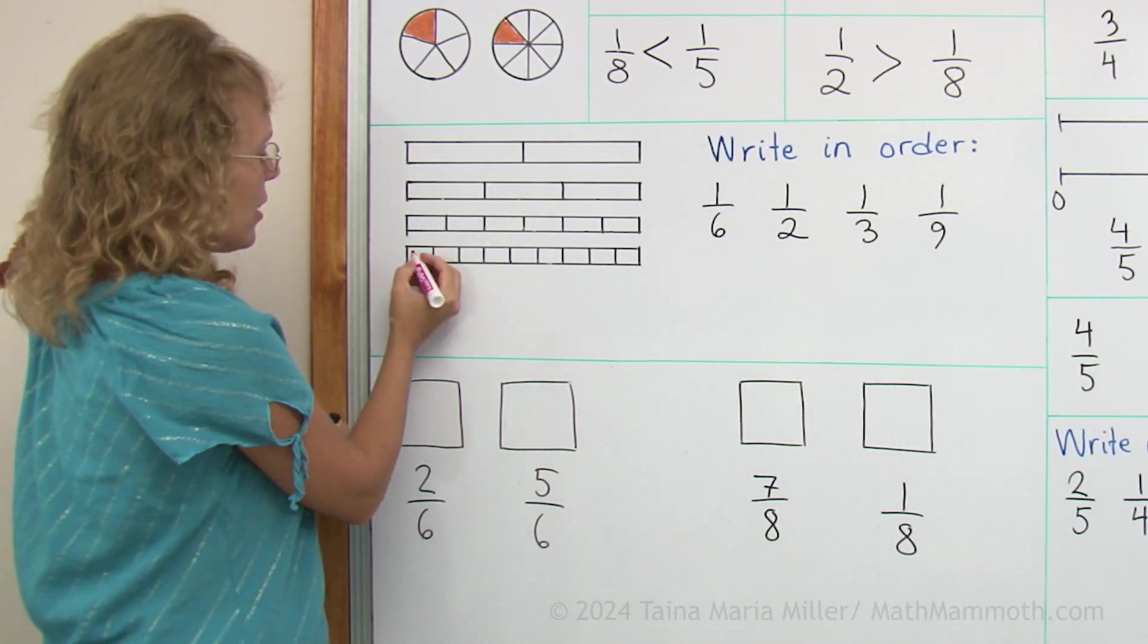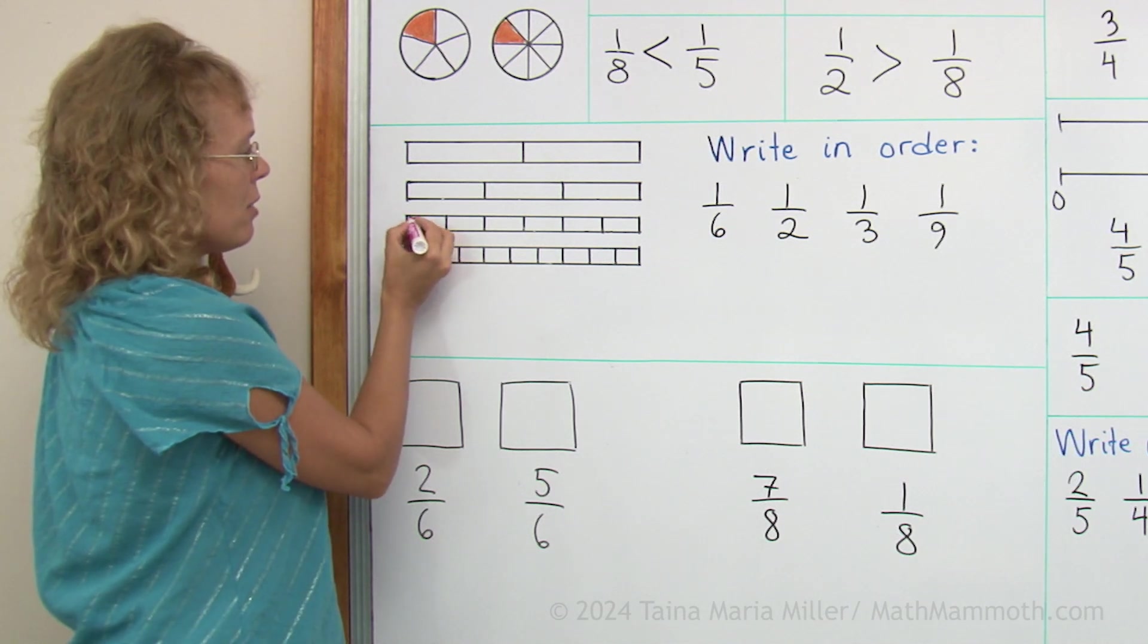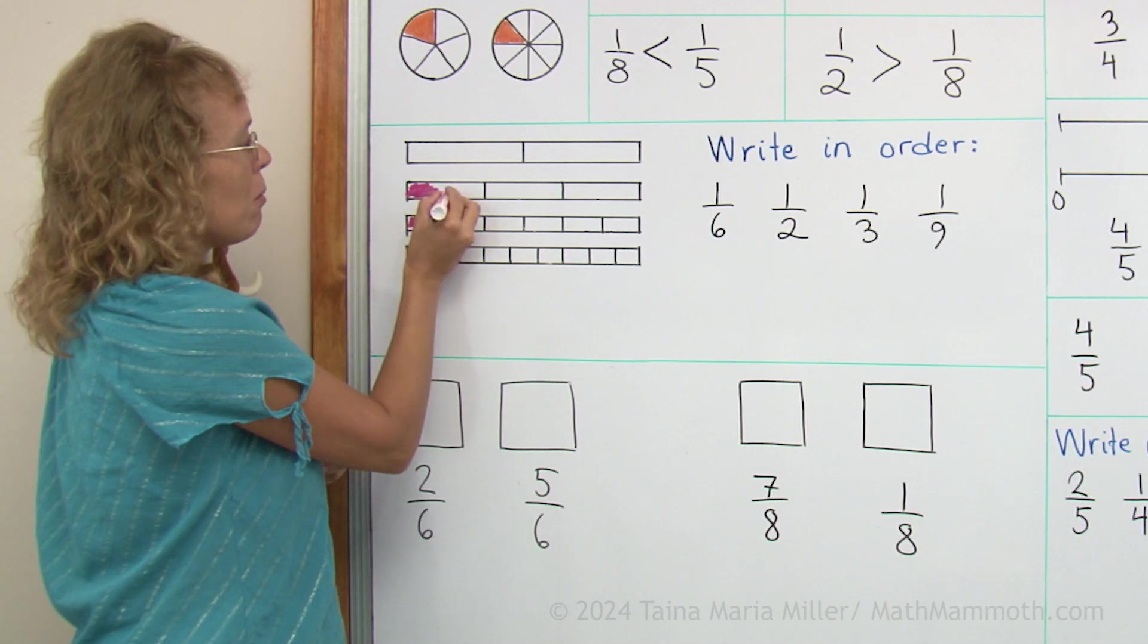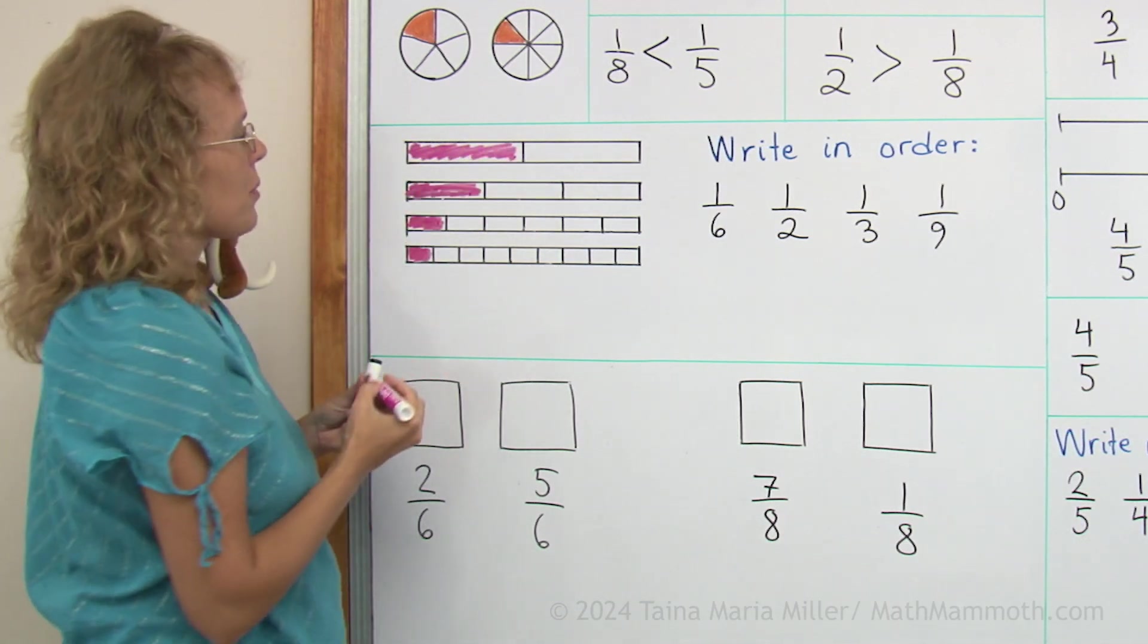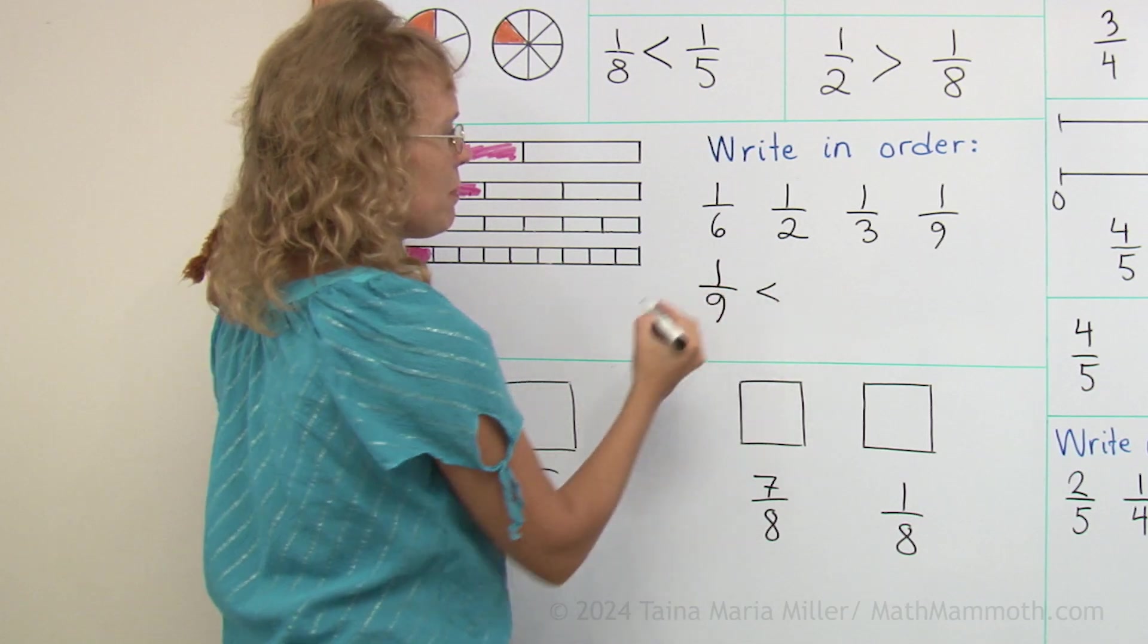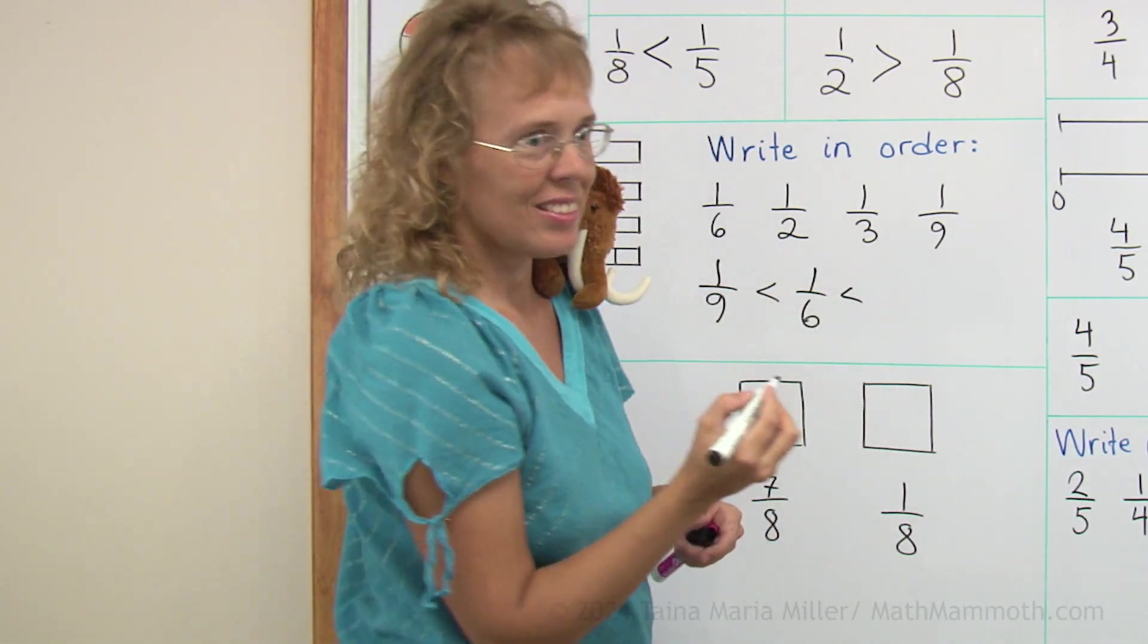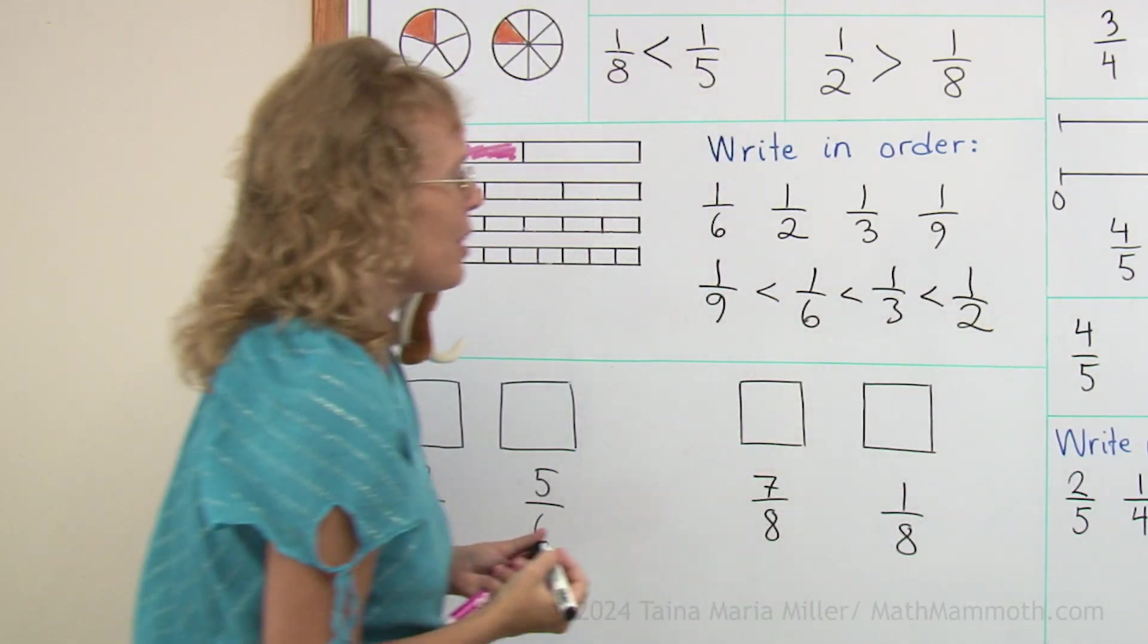You can see it here too. This here is one ninth, and then over here, one sixth and then one third and one half. So this is the smallest fraction, one ninth. And then next comes one sixth. And next, one third and lastly, the greatest fraction, one half.